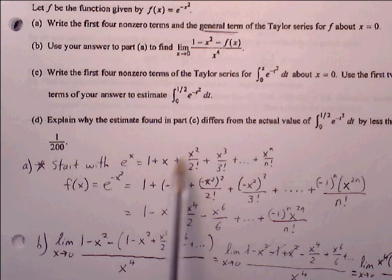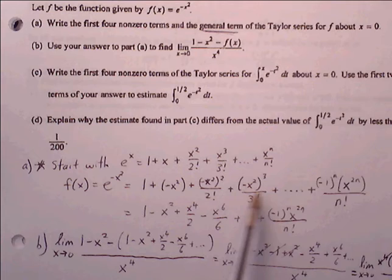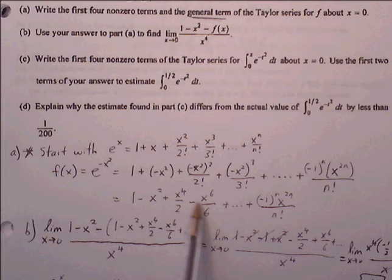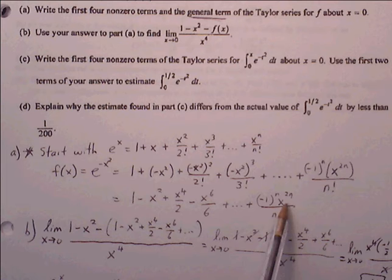Replacing each x with negative x squared gives us the Maclaurin polynomial for e to the negative x squared. We can also adjust the general term: because each term alternates in sign, we use negative 1 to the n as the alternating factor, and instead of x to the n it becomes x to the 2n over n factorial.